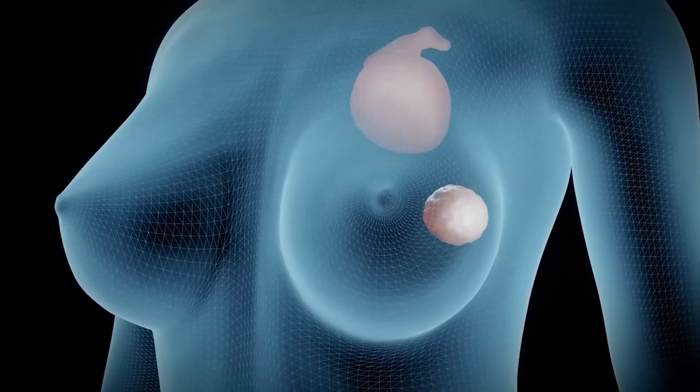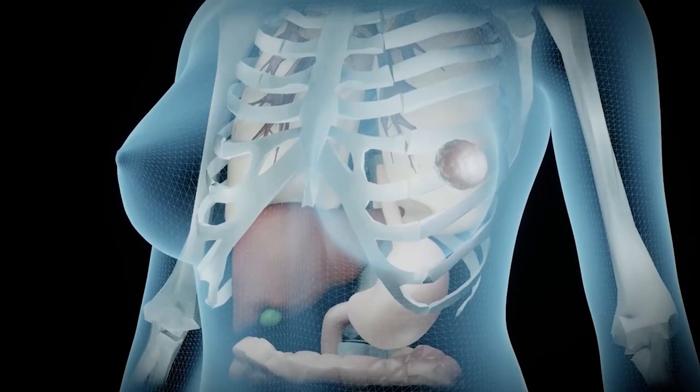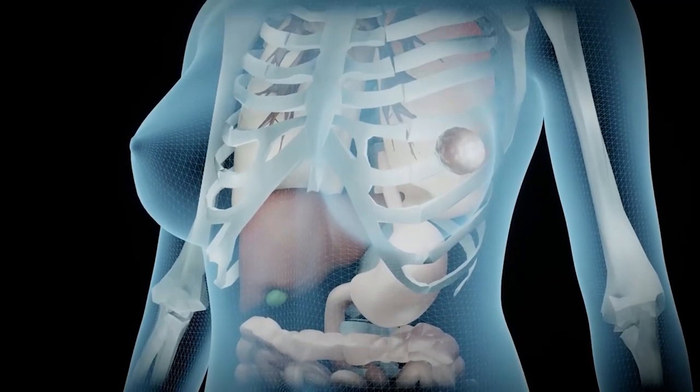Most chemotherapy drugs work systemically, meaning as they travel through your body in the bloodstream, they damage metastatic cancer cells as well as organs.